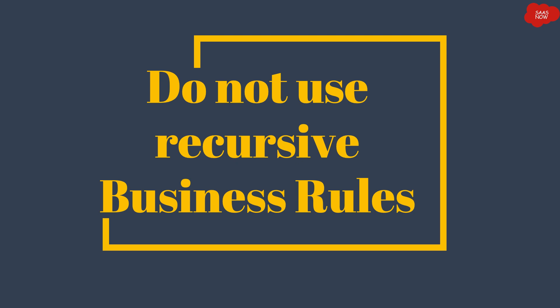For after or async business rules, you can try to use current.update(), but if you do use it in an after business rule, you should always use setWorkflow(false) so that it does not trigger any other business rules. Overall, current.update() is not recommended in ServiceNow business rules, and if the system finds it, it will automatically log an error.